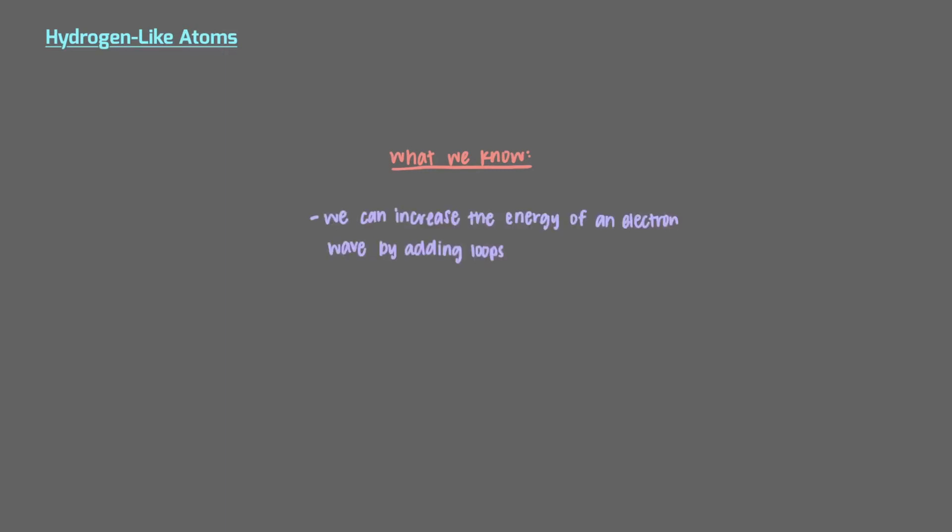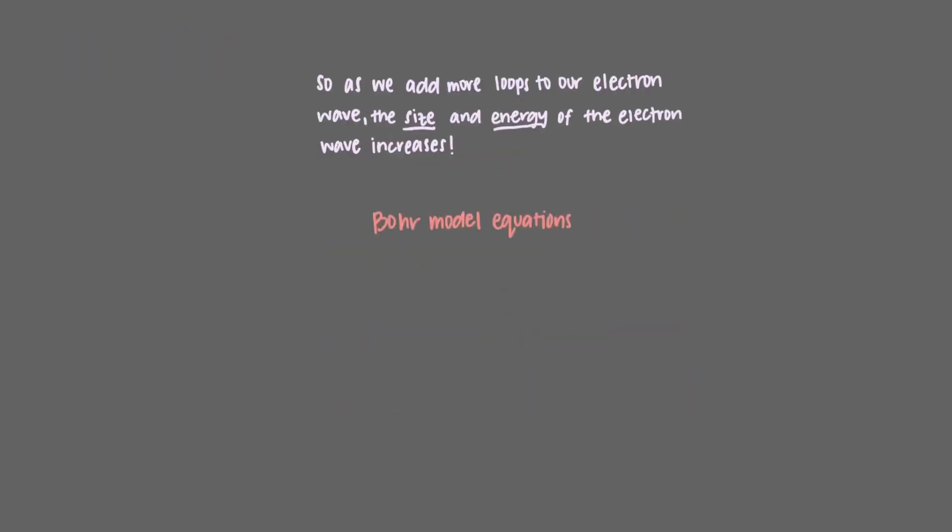By now you should know that we can increase the energy of an electron wave by adding loops. As we add more loops to our electron wave, the size and energy of the electron wave increases. This is described by the Bohr model equations.